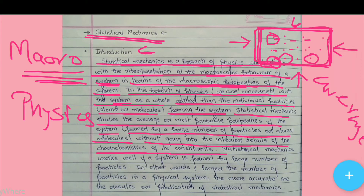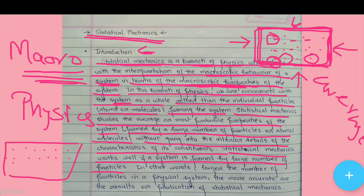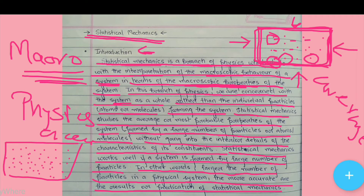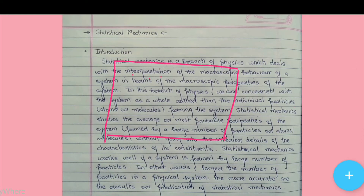Statistical mechanics works well if the system is formed by a large number of particles. The larger the number of particles in the system, the more accurate are the results or predictions of statistical mechanics. To sum up, in statistical mechanics we do not learn about individual particles — we learn about the system as a whole.